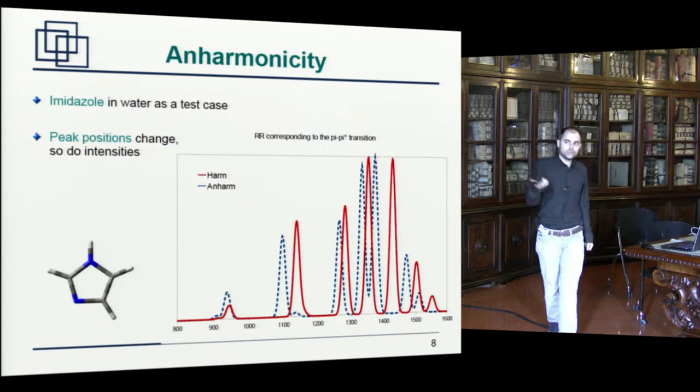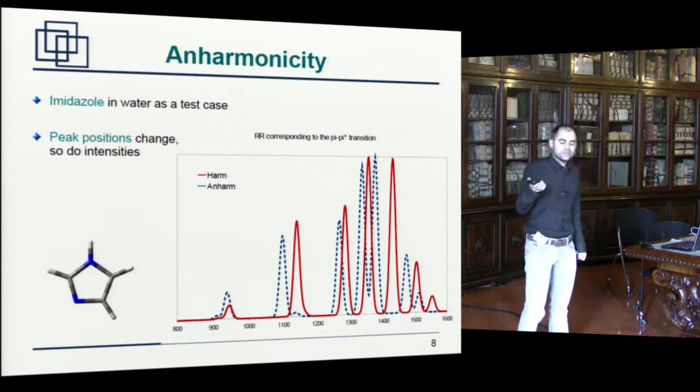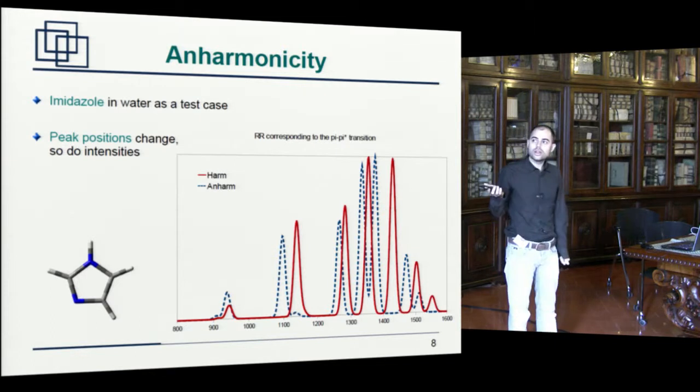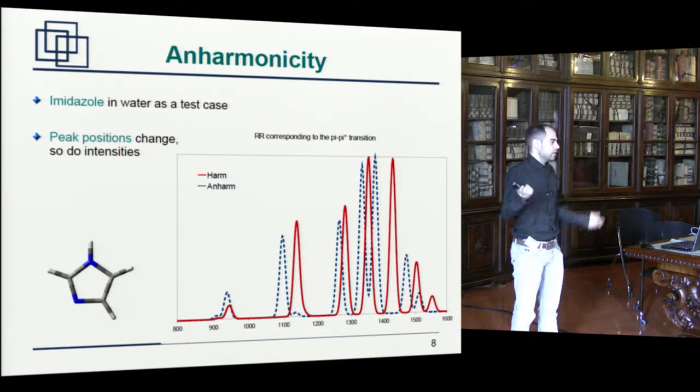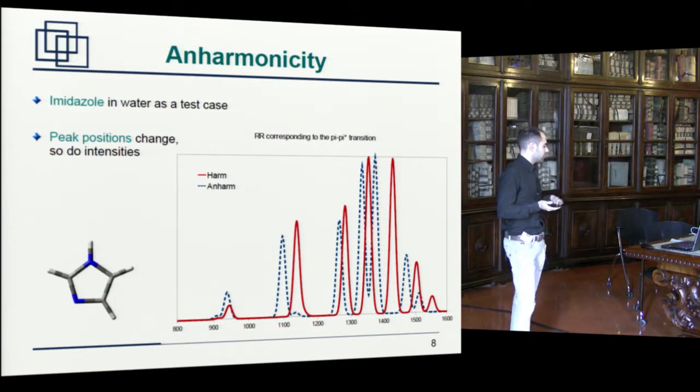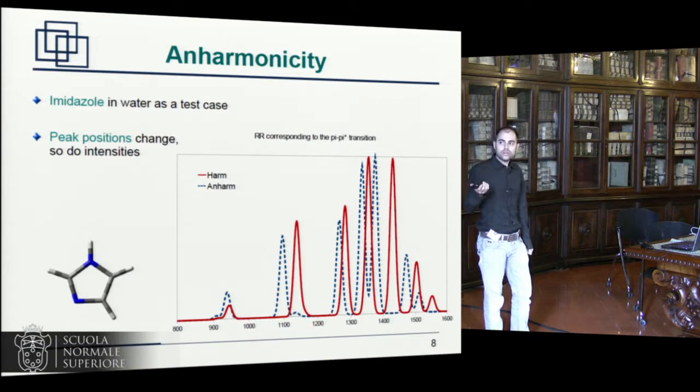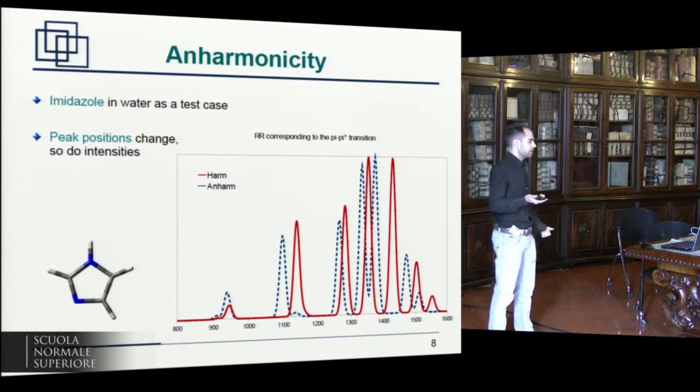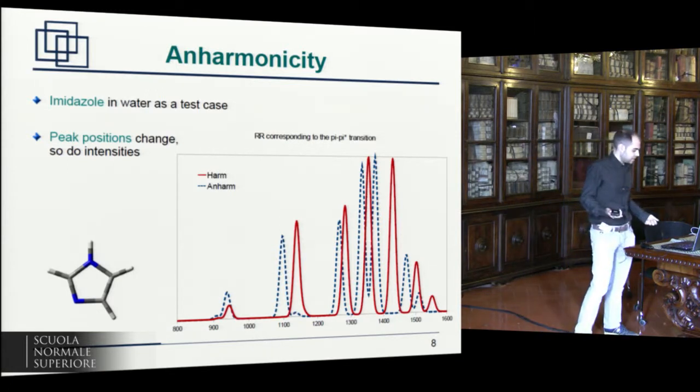So let's see some results. I took this very simple test molecule, imidazole. And I computed the resonance Raman spectra with and without anharmonicity effects. And you can see the biggest effect that can be seen is a shift of all the peaks. Because of course, the anharmonic frequencies are lower than the harmonic ones. And there is also an effect on the intensities, on the relative intensities of the spectra. Because of course, all these vibrational energies do go into the formula for computing the polarizability.